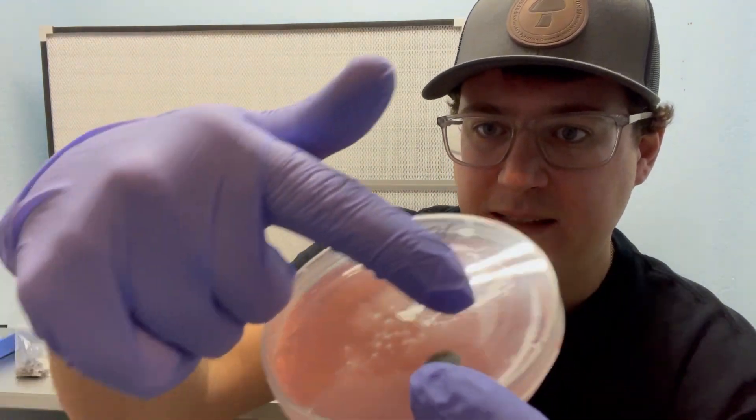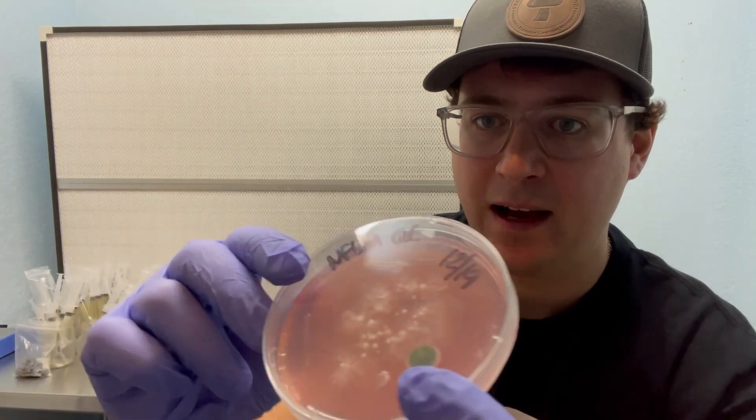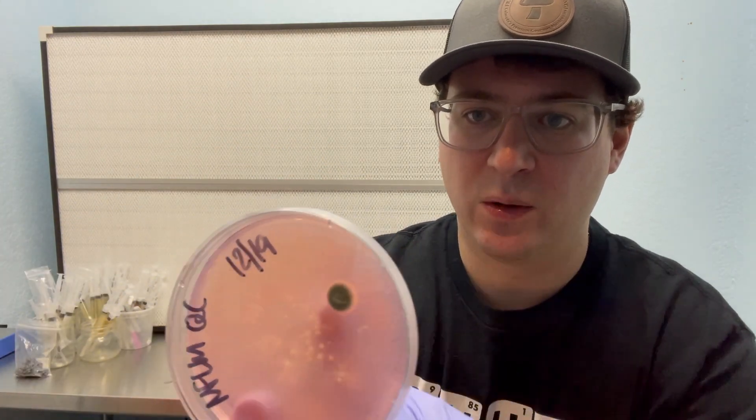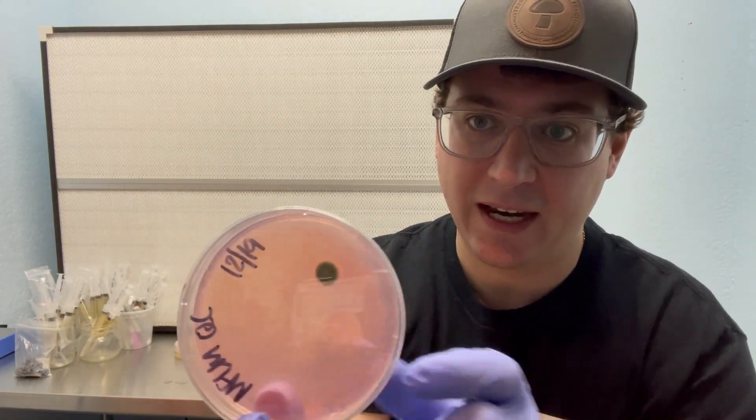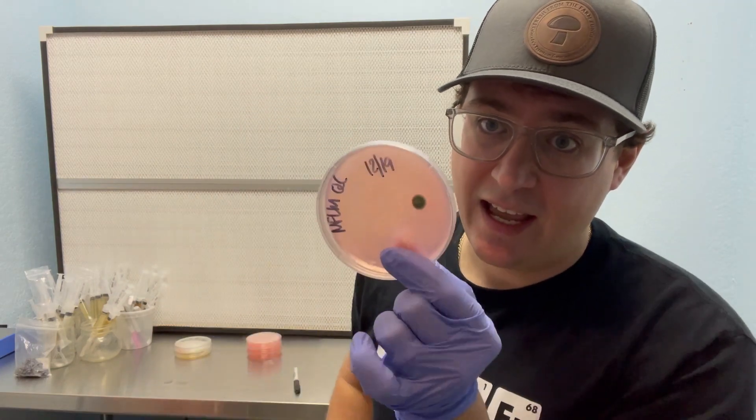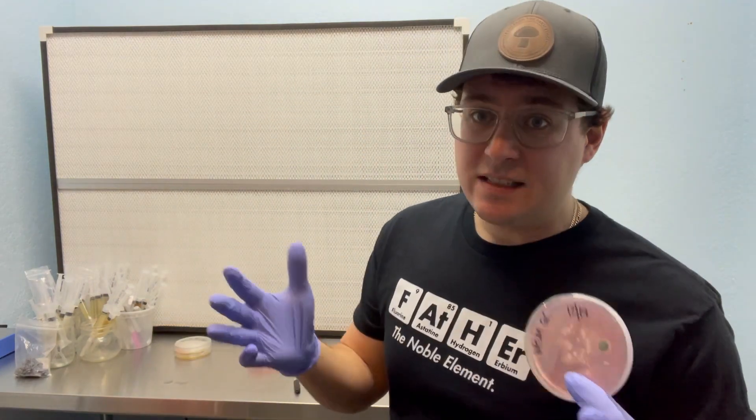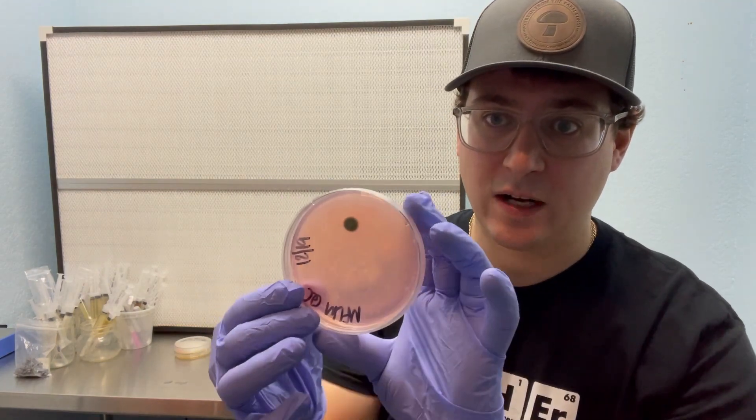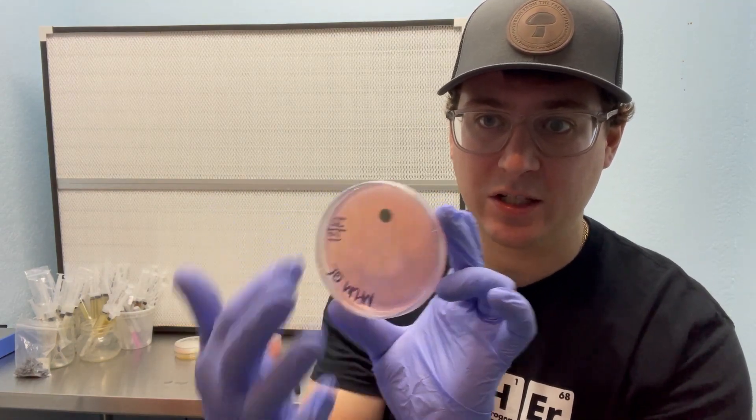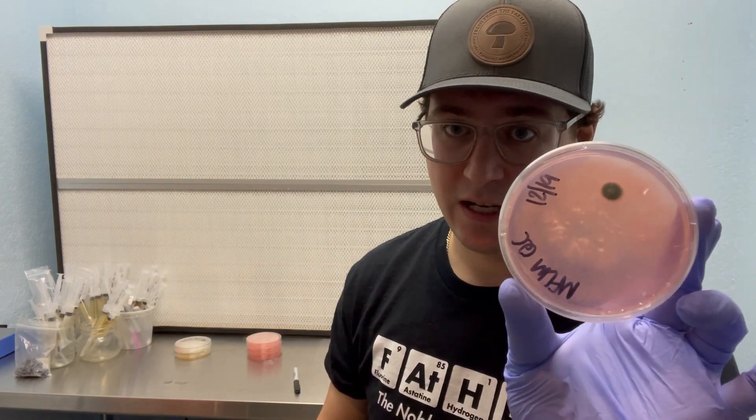So you can see the lion's mane mycelium is growing. However, there is a little spore of what looks like some penicillium that got into this petri dish and is growing. So your instinct as a new mycologist might be to try to cut out that blemish and preserve this dish.